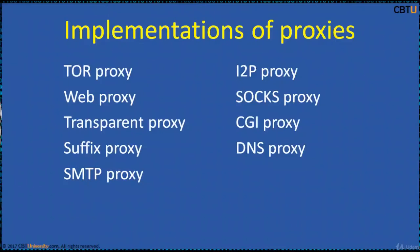Tor is intended to protect users' personal freedom, privacy, and ability to conduct confidential business by keeping their internet activities from being monitored. I2P proxy: the I2P anonymous network is a proxy network implementing garlic routing, which is an enhancement of Tor's onion routing. I2P is fully distributed and works by encrypting all communication in various layers and relaying them through a network of routers run by volunteers in various locations.